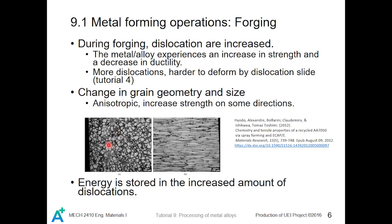For example, take a metal piece with a certain grain size and geometry. When an external force is applied on the top and bottom and the metal piece is forged, it changes shape. As you can see, the grain size and geometry after forging is clearly different from the original, and therefore the properties become anisotropic. The energy used in such a process is stored in the increased number of dislocations.